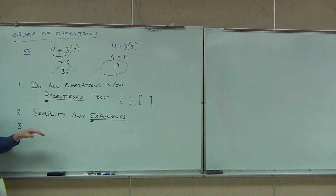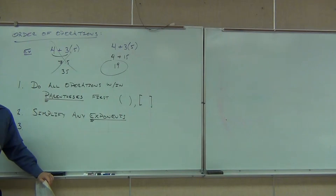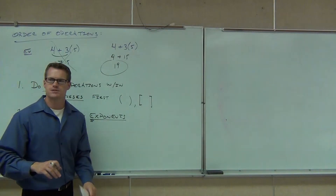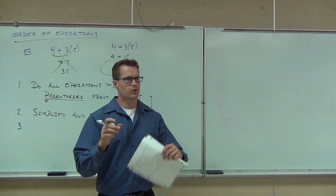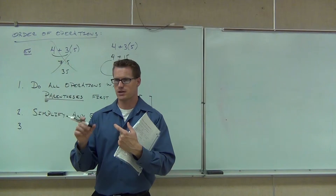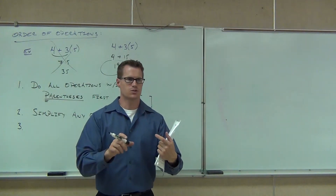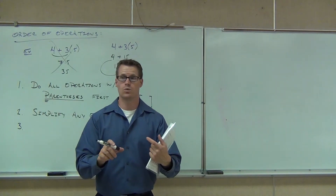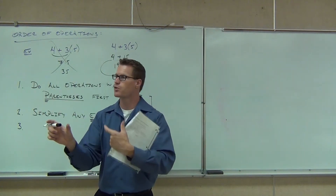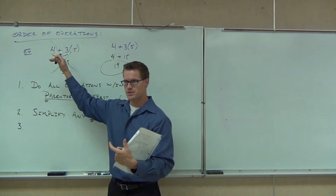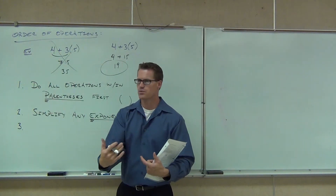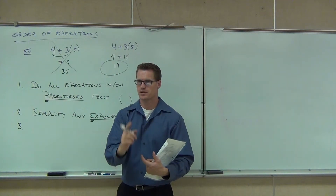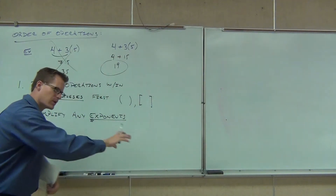The next step in our order of operations is we're going to do all multiplication and division. A lot of people think you have to absolutely do multiplication before division — that's not true. What's true is you do multiplication and division as they occur from left to right. So do you always do multiplication first? No. It might be that division came before multiplication. You do your parentheses, your exponents, then all your multiplication and division from left to right. Otherwise you're going to get the wrong answer.